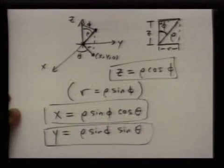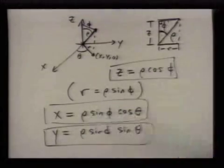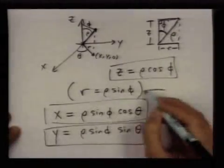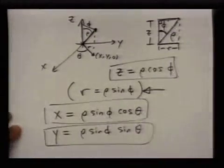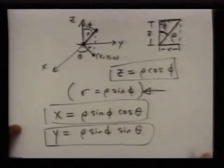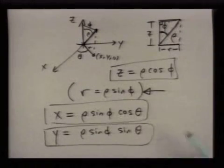These three formulas — x = rho·sin(phi)·cos(theta), y = rho·sin(phi)·sin(theta), z = rho·cos(phi) — let you take spherical coordinates and recover the XYZ coordinates. This formula for r = rho·sin(phi) is also particularly helpful to remember.